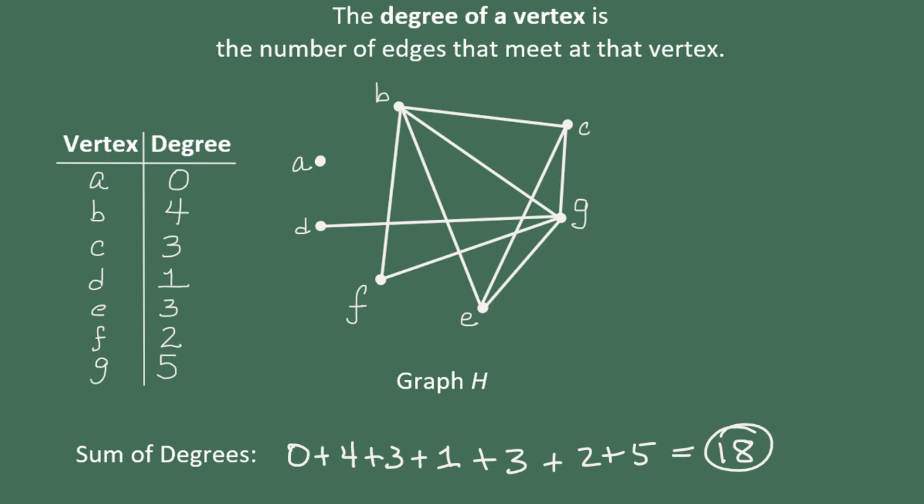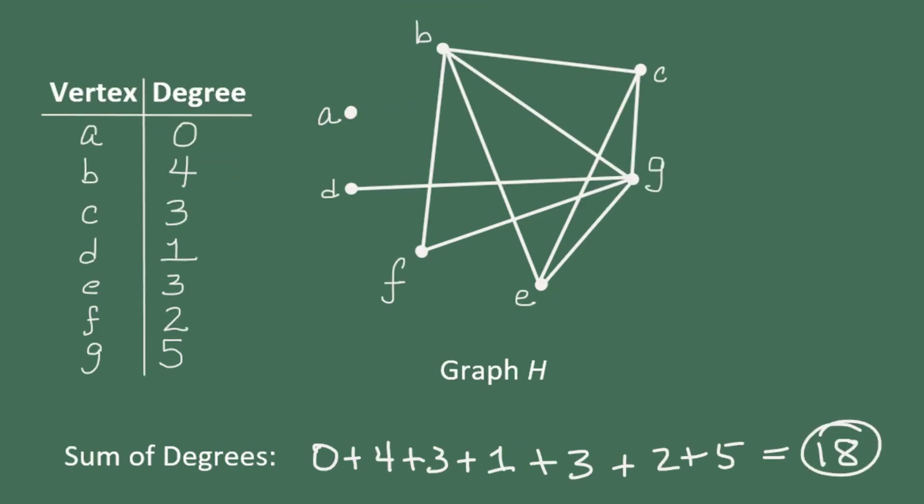So what's the significance of this sum? The sum of the degrees is the number of times that an edge meets a vertex in the entire graph. That happens eighteen times in this graph.